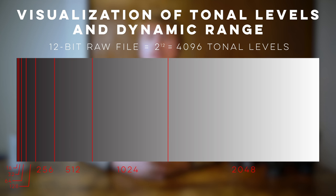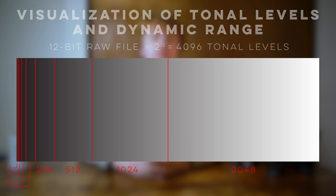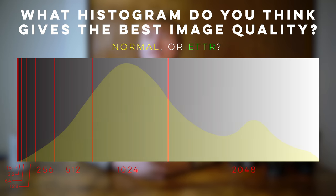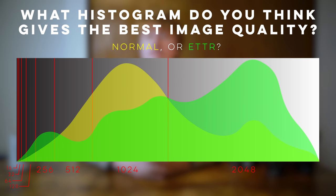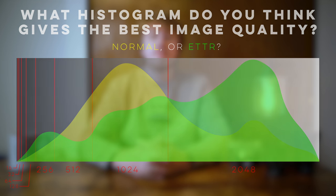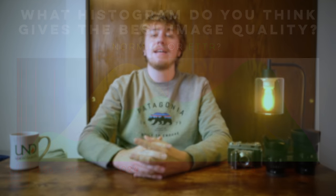Therefore, if you don't utilize the right sections of your histogram — which often occurs when trying to produce a normal exposure — you are effectively wasting a large amount of the available encoding levels of your camera. In practice, biasing your exposures so that the histogram is pushed against the right boundary without blowing highlights will produce the highest image quality.